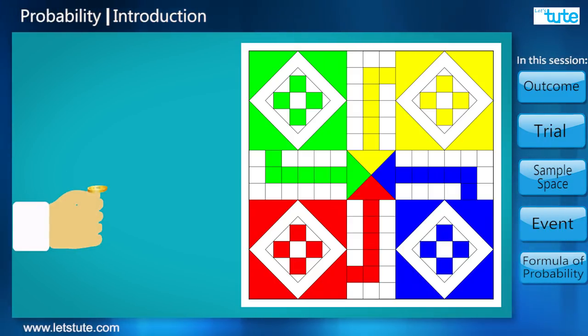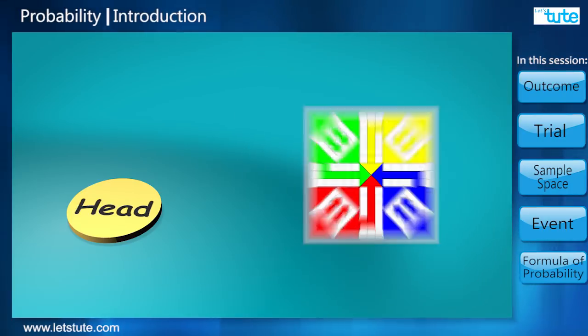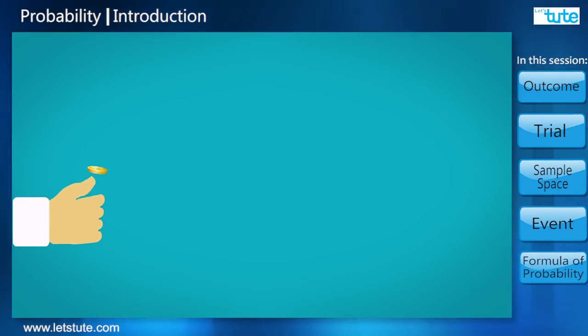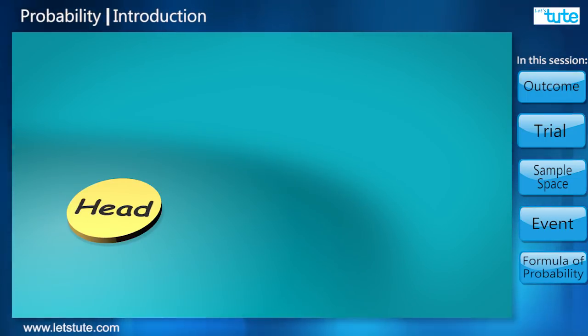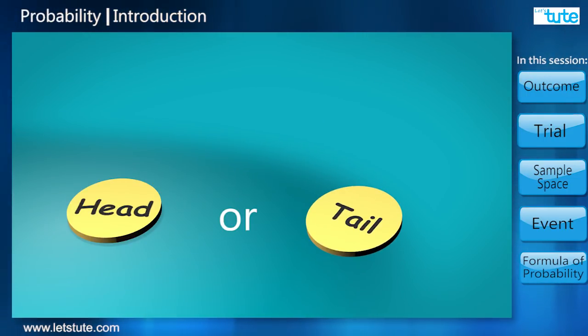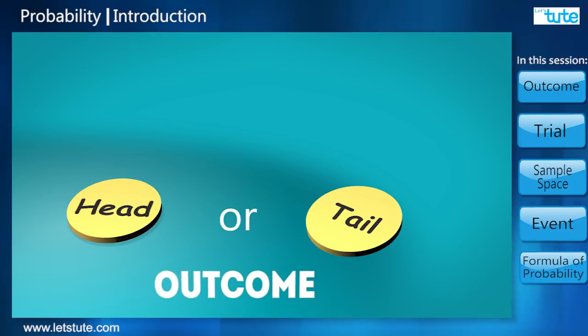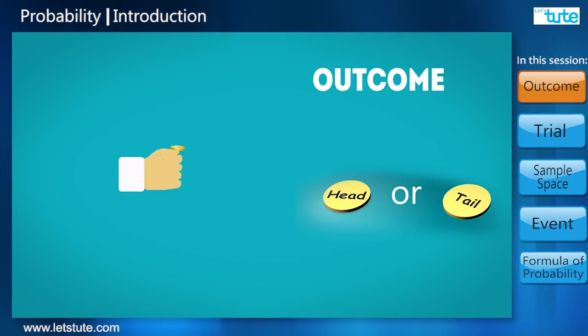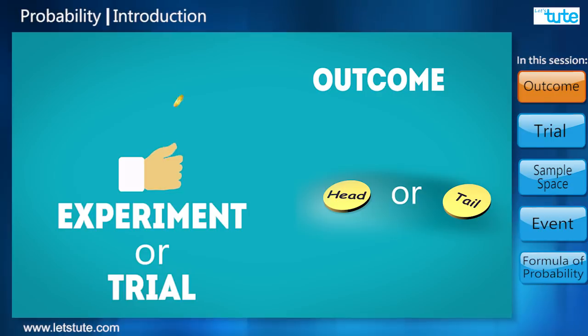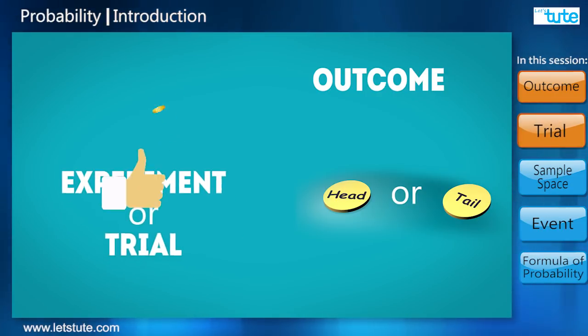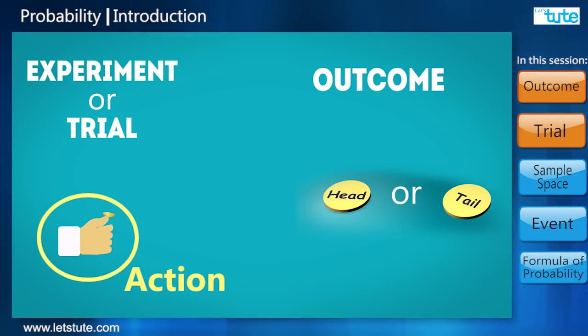The person getting a head would start the game. Once tossed, there can be two results: either we get a head or tail. These results are called outcomes. In mathematics, tossing a coin is called an experiment or a trial. It is an action which can have more than one result. An outcome is a probable result when the experiment or trial is performed.